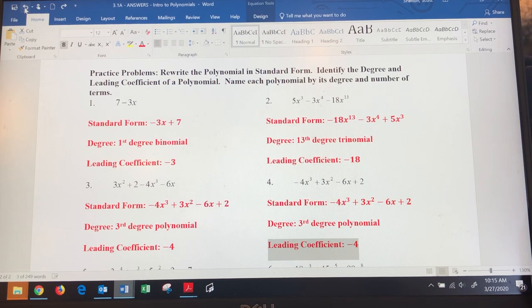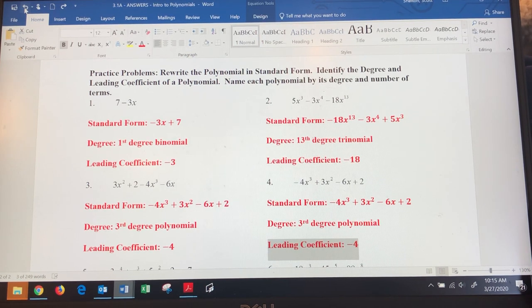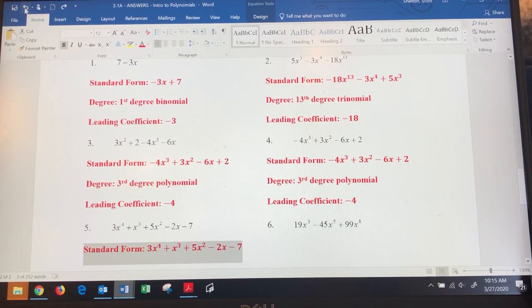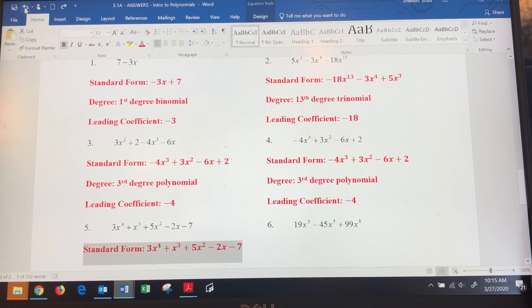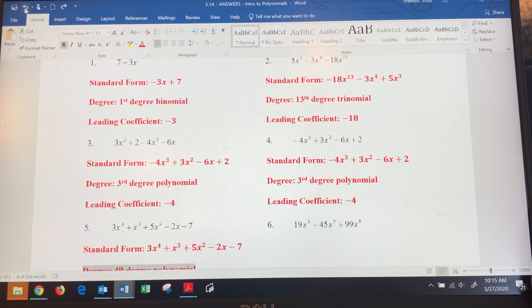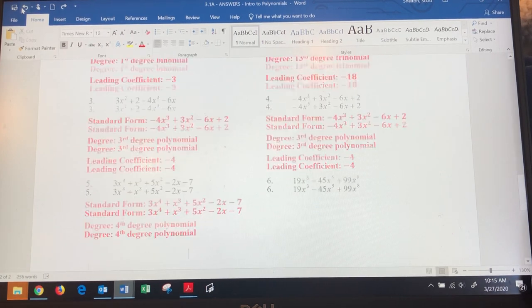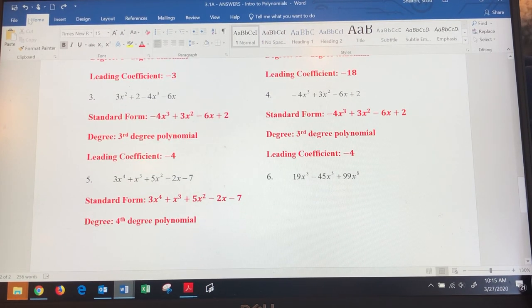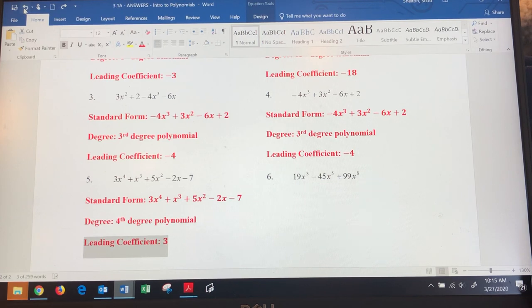Moving on to number five: it's already in standard form, so no reason to reorganize there. It makes it a fourth degree polynomial. There are five terms - that makes it a polynomial. Anything more than three terms we're going to call a polynomial, and it's fourth degree. Leading coefficient would be positive 3.